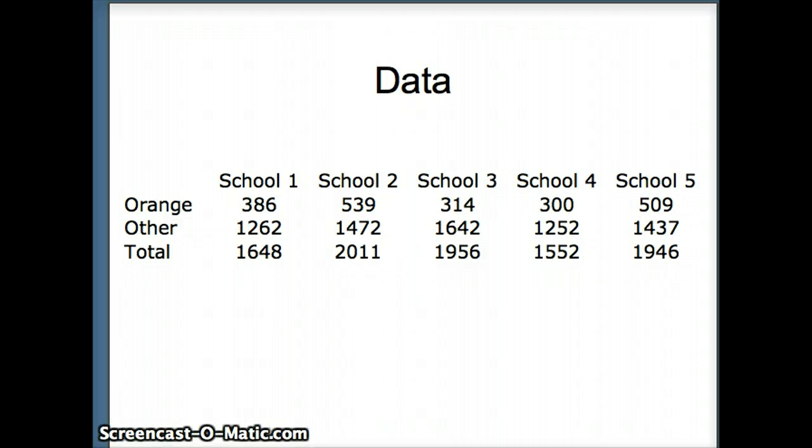We have five schools. Orange, we had to go ahead and put in the non-orange pieces so that we can use our chi-square test appropriately, and the total would be the numbers on the bottom, the sum of the orange and the non-orange or other pieces of data.